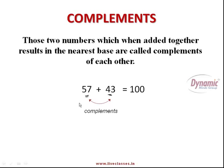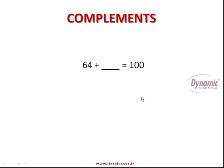57 is a complement of 43, and 43 is a complement of 57, because both of them add up to the base 100. Now let's take another example: what is the complement of 64?